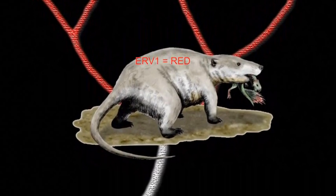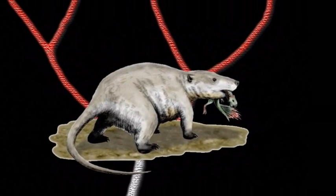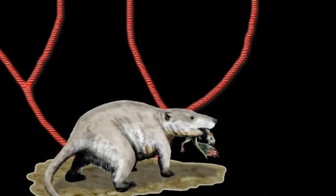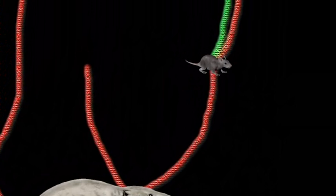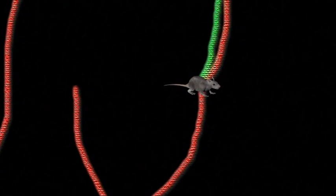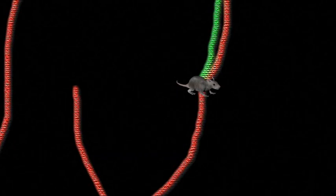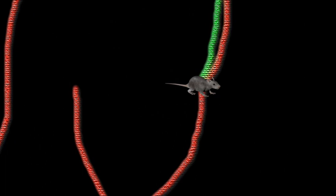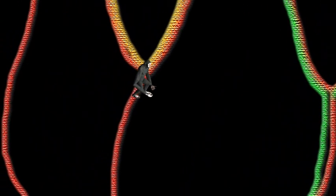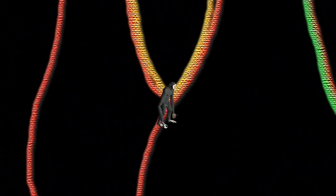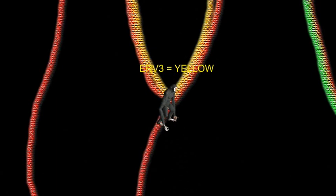Fast forward 30 million years. Different lineages have evolved and derived from the original common ancestor, and there are now many different types of mammals in existence, all carrying ERV-1. A small rodent, let's call it Secundus mausus, is the common ancestor of mice and rats, and is infected by a new species-specific retrovirus that becomes endogenous — this is ERV-2. In a different line, Secundus apis, the common ancestor of all great apes, acquires a third retrovirus, ERV-3.